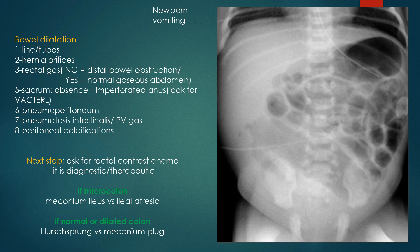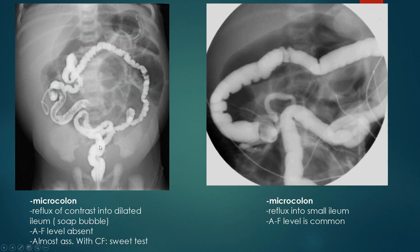There are four differential diagnoses of distal bowel obstruction in neonatal cases, divided according to the caliber of the colon. If there is a micro-colon, this can be either meconium ileus or ileal atresia. If the colon is normal or dilated, it is either Hirschsprung's disease or meconium plug.